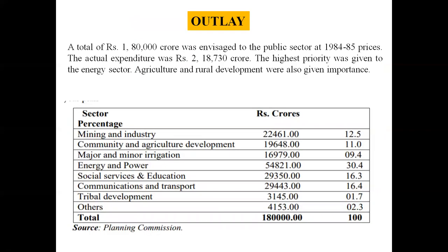Let's see what the outlay of the Seventh Five-Year Plan was. The total outlay initially decided was ₹1,80,000 crores, but it was revised and the actual expenditure was ₹2,18,730 crores. The highest priority sectors were agriculture and energy and power — 30% of the total outlay was invested to upgrade the energy and power sector. Social services, education, communication, and transportation were also given emphasis, with outlay distributed accordingly.